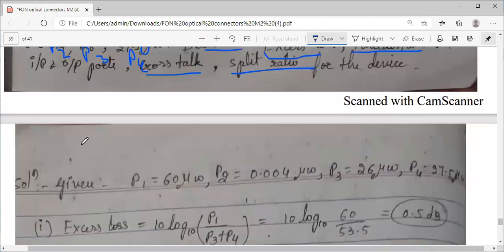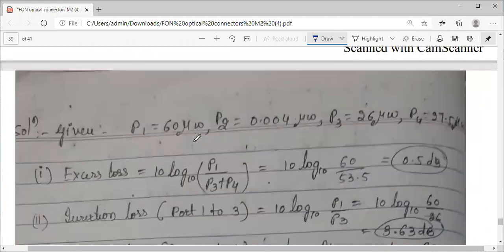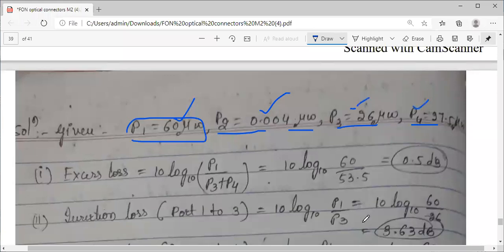Given data: port one applied power is given to you, output powers P2, P3, P4. Out of 60 microwatts, some is in the second port, some is distributed in the third and fourth. We need to find the different losses in this FBT coupler which is a four-port coupler.